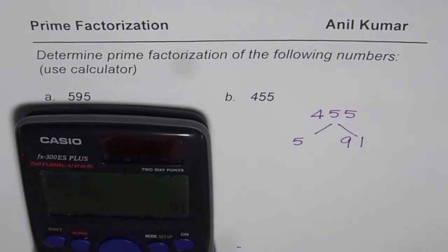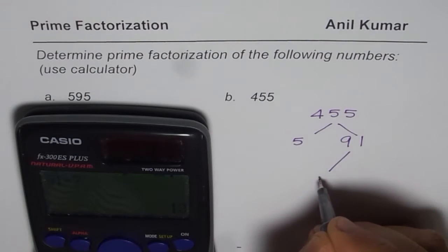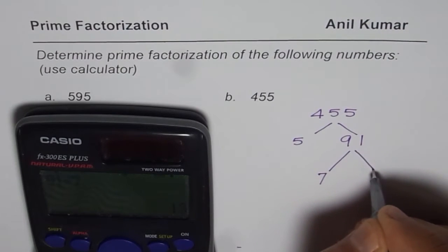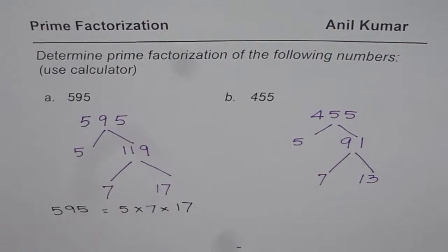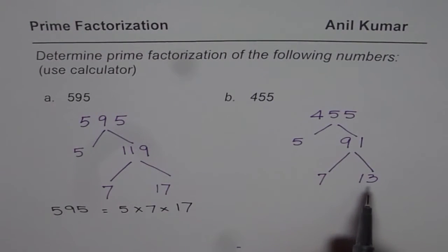Now, can 91 be divided by any number? Let us try. 91 divided by, let us say, 7 is what? Oh, 13. Yes, it can be. So 7 times 13 is 91. It is not a prime number. 91 is 7 times 13.